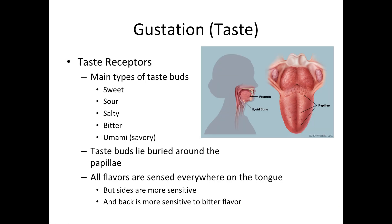Let's start with taste or gustation. The taste receptors are the taste buds. People often mistakenly believe the tiny bumps on our tongues are taste buds, but those bumps are papillae. The taste buds are buried around these papillae. When chemicals in food dissolve in the saliva that coats the tongue, they disperse throughout the saliva and reach the taste receptors. You need your saliva for a food chemical to get into your taste buds — if your tongue is dry, taste buds will receive very few chemical signals and it will be hard to taste food.